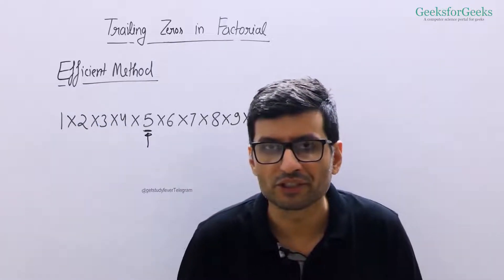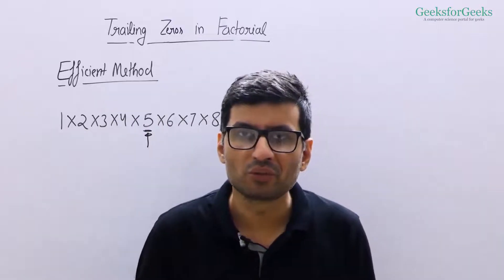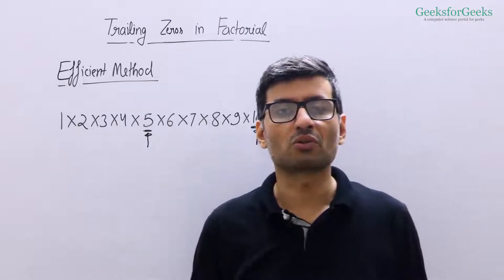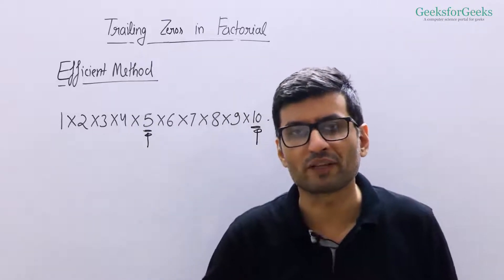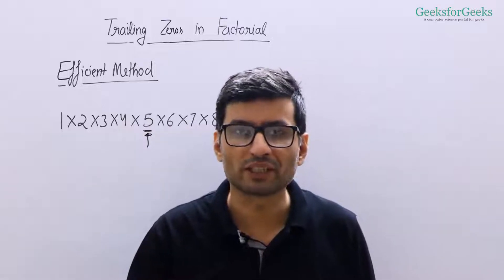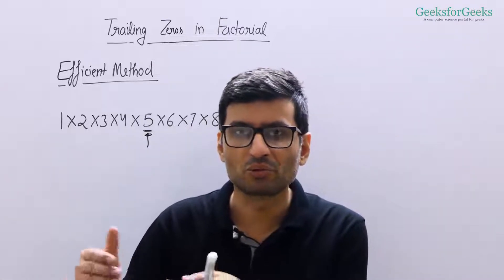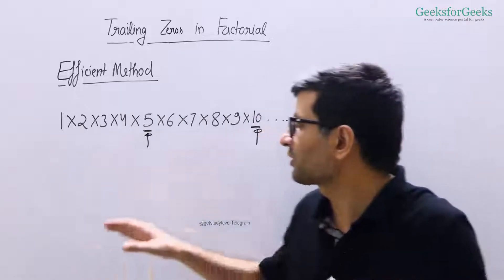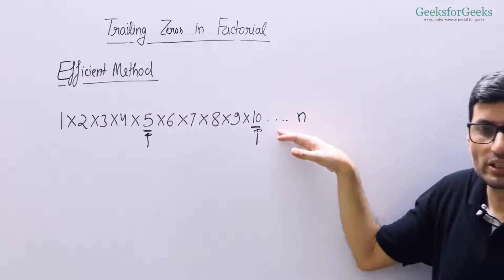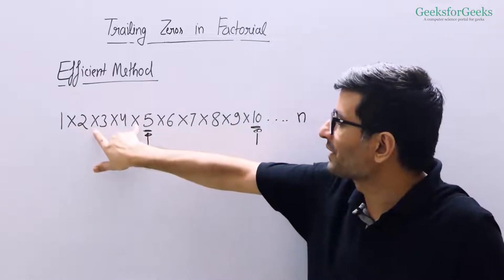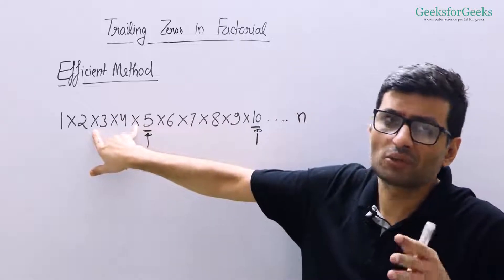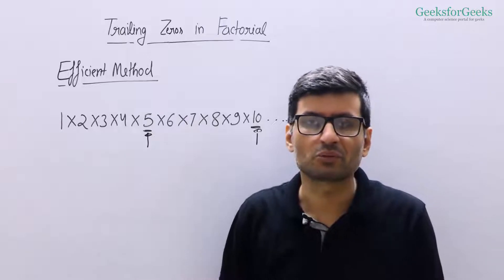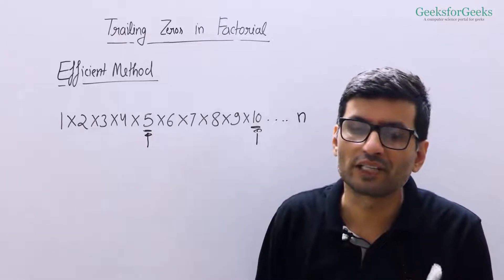Let us now discuss the idea for an efficient solution. The idea is to count how many twos and fives we have in the prime factorization of the factorial. If you write down the prime factorization of a number and count pairs of twos and fives, you can count trailing zeros because two and five together form one trailing zero. For factorials, the number of fives is always less than the number of twos, so we simply need to count how many fives appear in the prime factorization.